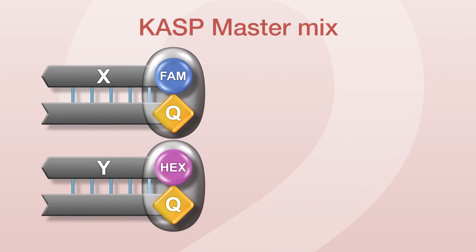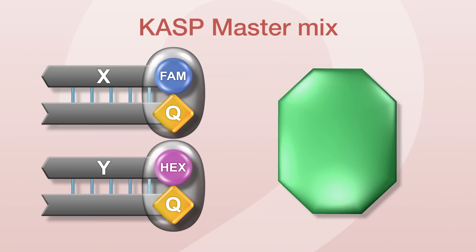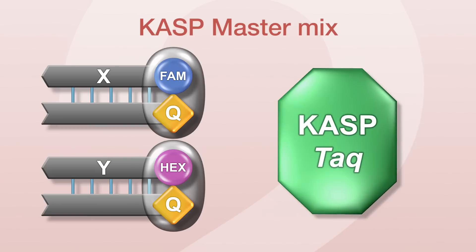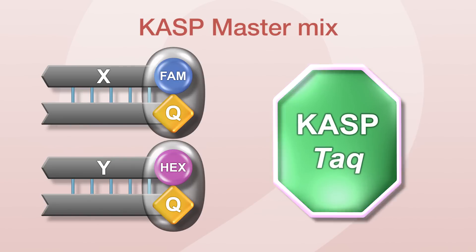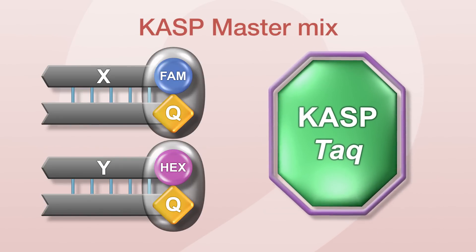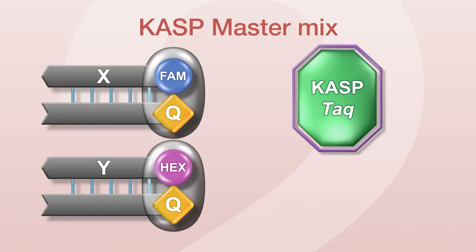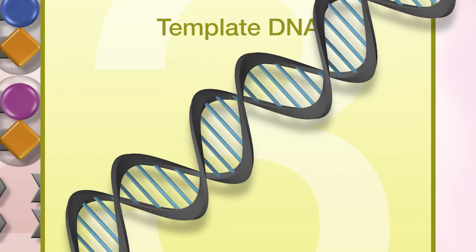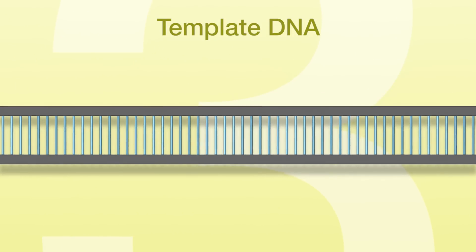In addition to the two reporter cassettes, the CASP master mix contains all other components typically found in a PCR mix. These include the enzyme KASP polymerase, a specially modified version of the enzyme that is chemically inactivated in the CASP master mix. The other components present are dNTPs, salts, and buffer. Sample DNA is also required as template for the PCR.